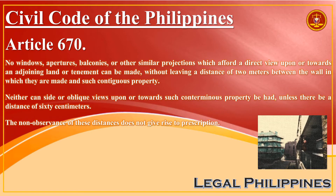Civil Code, Article 670. No windows, apertures, balconies, or other similar projections which afford a direct view upon or towards an adjoining land or tenement can be made, without leaving a distance of two metres between the wall in which they are made and such contiguous property.